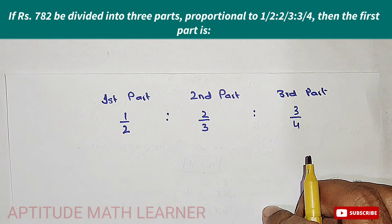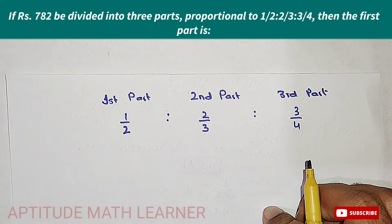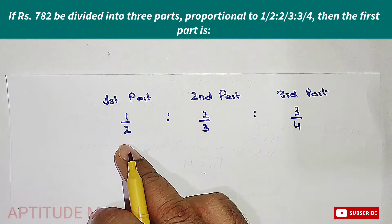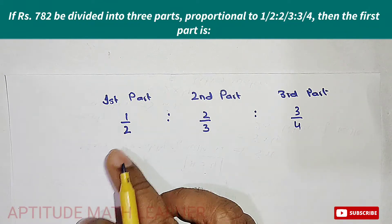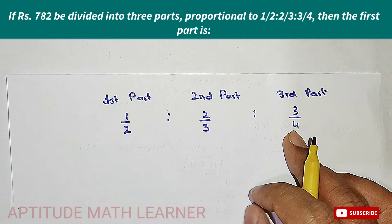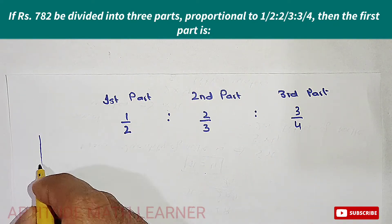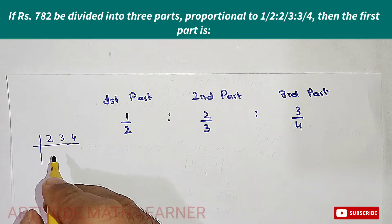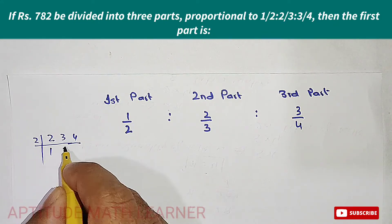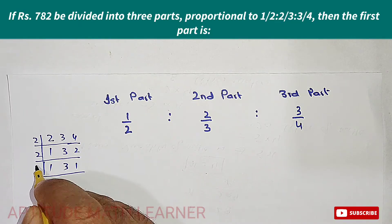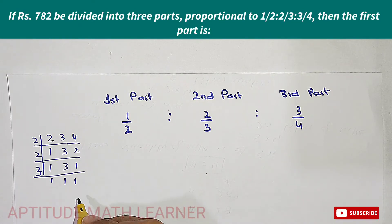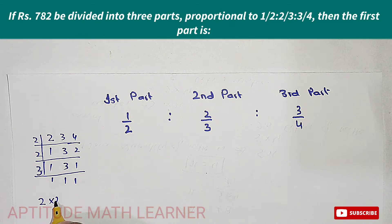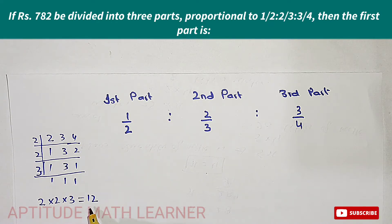Since the ratios are in fractional form, we need to convert them. For this, we take the LCM of the denominators 2, 3, and 4. Calculating: 2 × 2 × 3 = 12, so the LCM is 12.